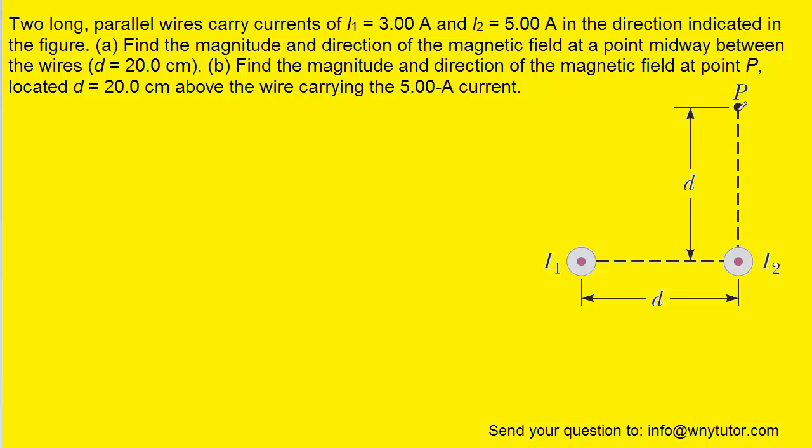We know that the magnetic field produced at point P and also at the point midway between the wires is produced by current-carrying wires. The magnetic field equals a constant multiplied by the current divided by 2π times a distance. We have two wires labeled I₁ and I₂, so we're going to use this formula twice. We're setting up the equation twice using subscripts of 1 for the first wire and 2 for the second wire.